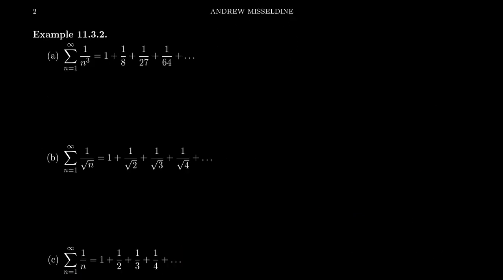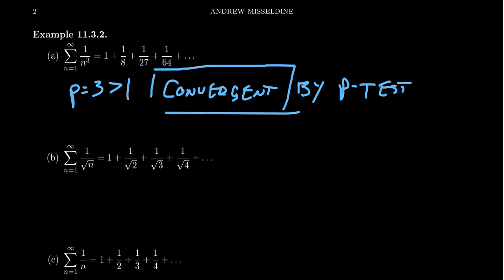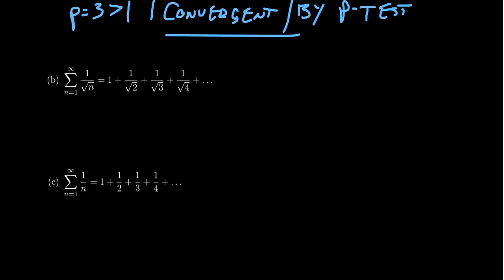For example, the sum from n equals 1 to infinity of 1 over n cubed is a p-series with p equals 3. Since 3 is greater than 1, this series is convergent by the p-test. That's all we need to do—very simple, with no antiderivatives necessary.